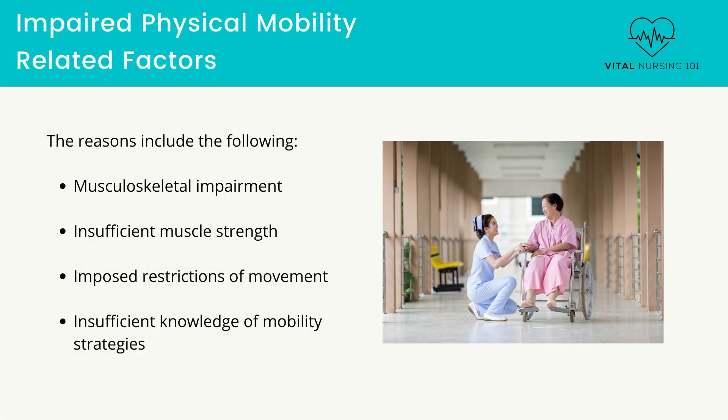What are the reasons a patient may have impaired physical mobility? The reasons include musculoskeletal impairments such as a loss of body part, insufficient muscle strength, imposed restrictions of movement including change in center of gravity creating balance problems, and insufficient knowledge of mobility strategies.